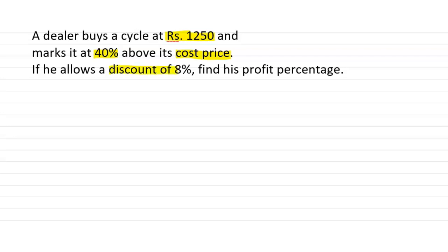If he allows a discount of 8%, find his profit percentage. So here the shopkeeper is buying the cycle at Rs. 1250. Now he needs to mark it.